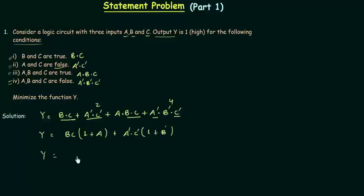A or 1 is equal to 1. BC and 1. 1 or B complement is again equal to 1. BC and 1 is definitely BC. A'C' and 1 is A'C'. So this is the minimized function Y.